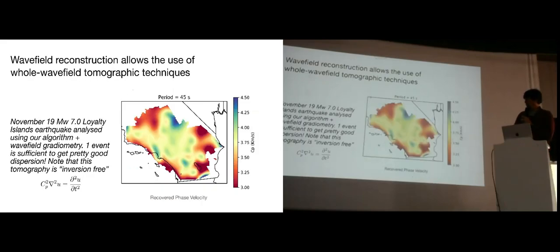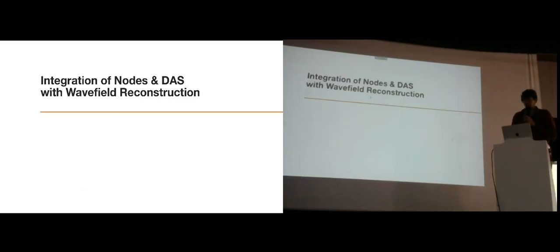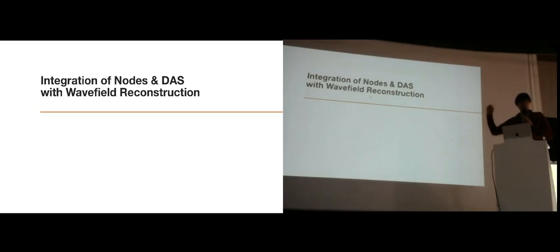And you can get a tomography result for all of Southern California from just one event, which actually corresponds pretty well to the state-of-the-art tomography model that required far more than one event to produce. So essentially, the really interesting question for this group is: what can we do with heterogeneous sensors using this wave-field reconstruction idea?